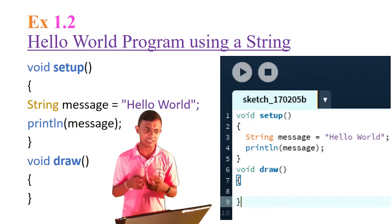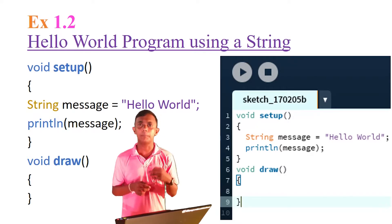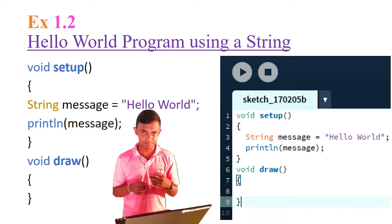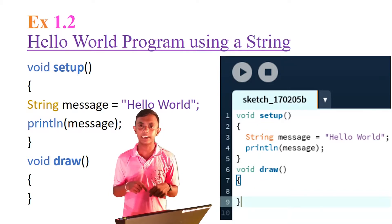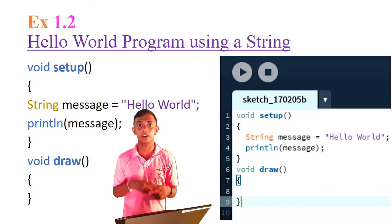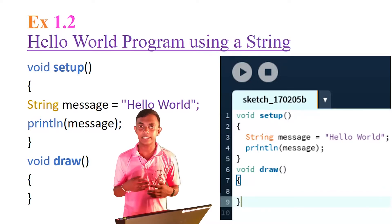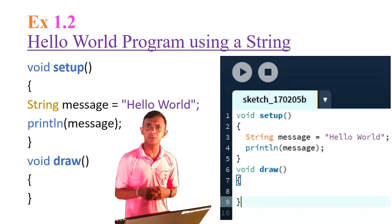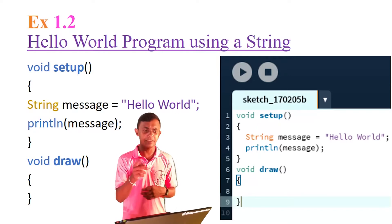We have an example — the 1.2 sample. You can download the code using the link in the description. We will update the tutorial and update the folder. We will discuss the 1.2 example in PDF.